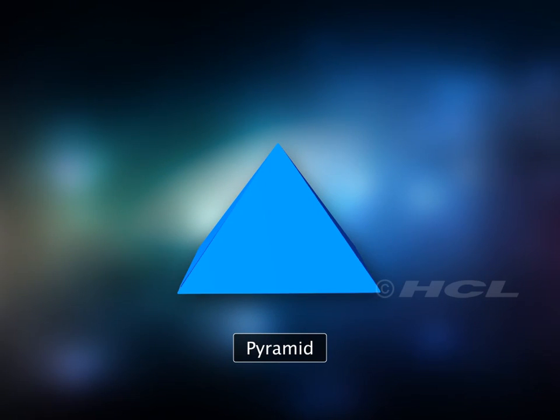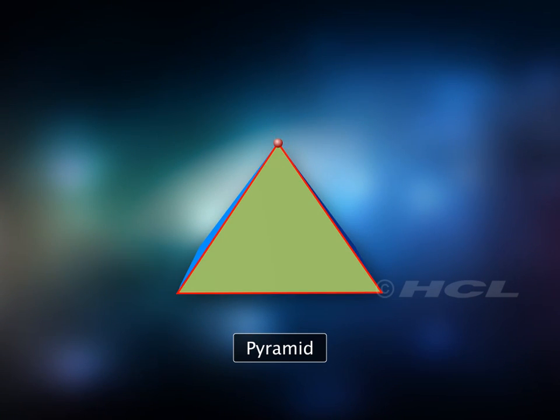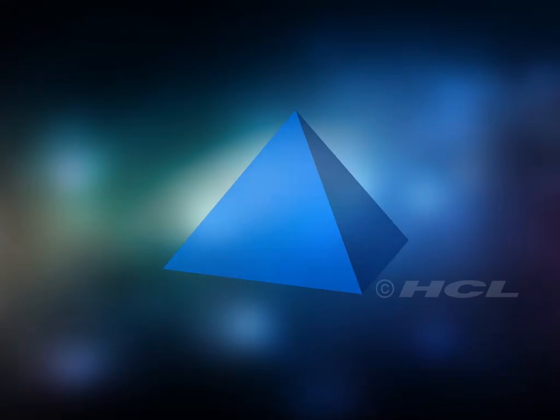A pyramid is a solid whose base is a polygon and whose lateral faces are triangles with a common vertex. Like prisms, pyramids are also named based on the shape of their bases.